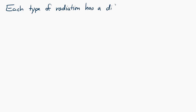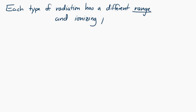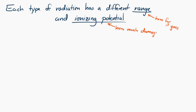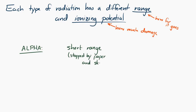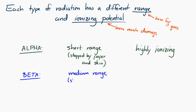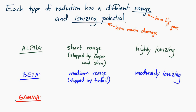Each type of radiation has a different range and a different ionizing potential, which is a measure of how much it can harm matter. Alpha particles have a short range — they're easily stopped by paper and your outer skin layer — but they are highly ionizing if they do reach the matter. Beta radiation has a moderate range; it can be stopped by tin foil or a quarter meter of air, and it's moderately ionizing, not as damaging as alpha radiation.